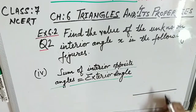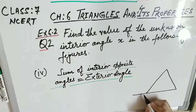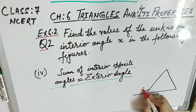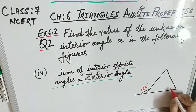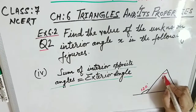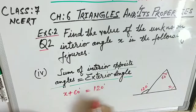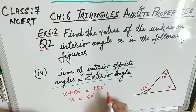Different figures are given so you can understand and practice well — identifying exterior angles and where to apply the property. Figure 4: the exterior angle is 120° and the opposite interior angles are x and 60°. Applying the property: x + 60° = 120°, so x = 60°.